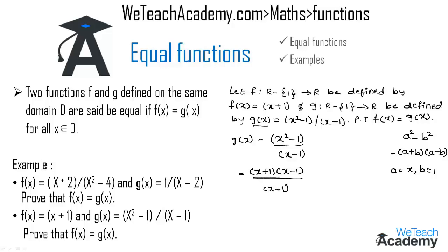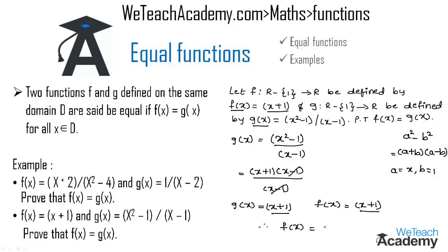We cancel (x - 1) in the numerator and denominator and get g(x) = x + 1. Since f(x) is also given as x + 1, both functions are equal. Therefore we conclude that f(x) = g(x).